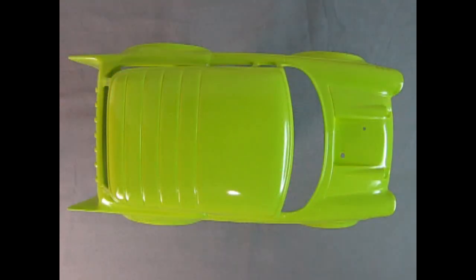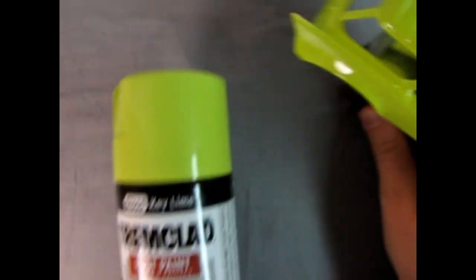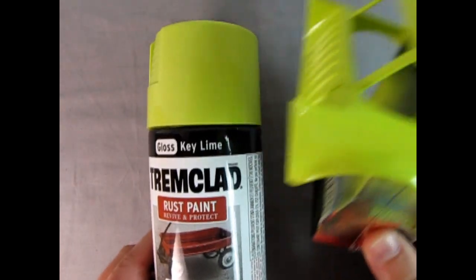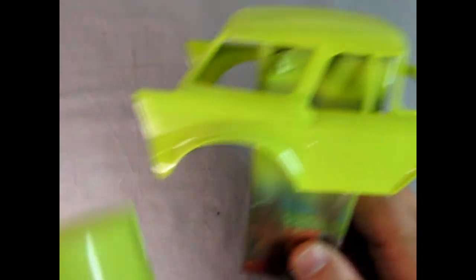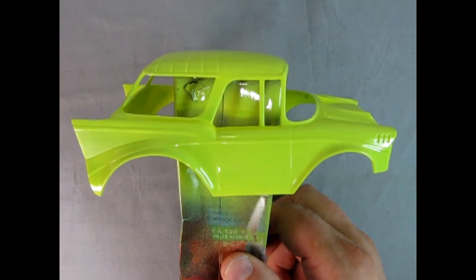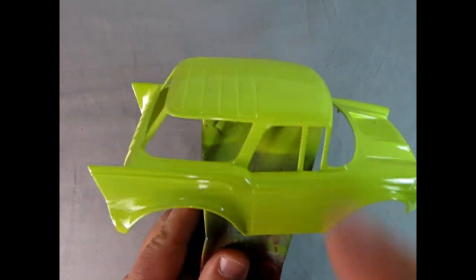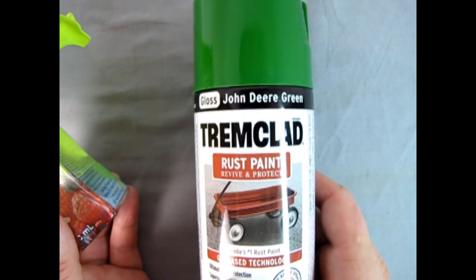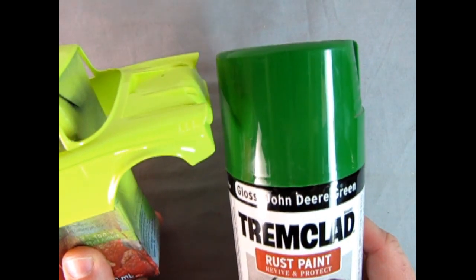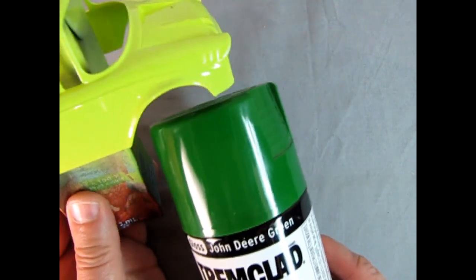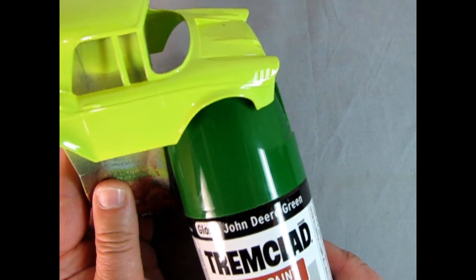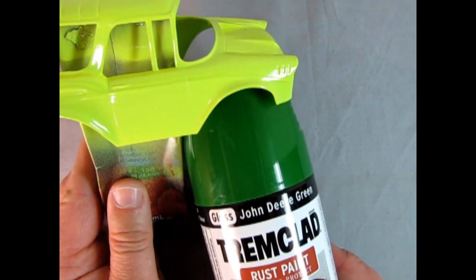And here we have the body of the Go Mad Nomad which I painted with this Trim Clad key lime paint. As you can see it is quite a nice bright color but what I want to do is paint the roof a darker color and I have this Trim Clad John Deere green and I do believe that would actually be a nice kind of contrast here. So that's sort of what it would look like.